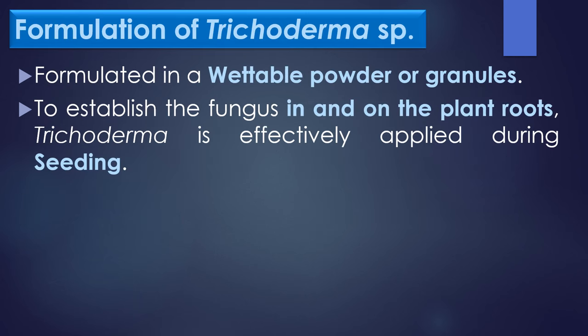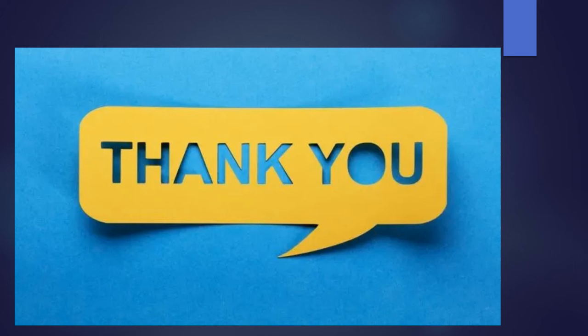Finally, formulation of Trichoderma species: Trichoderma species products are formulated in wettable powder or granules. In order to establish the fungus in and on the plant's root, Trichoderma is effectively applied during the seedling stage of the plant. Thank you viewers for your support.